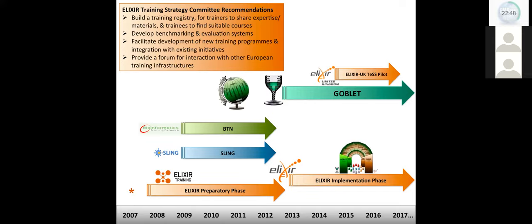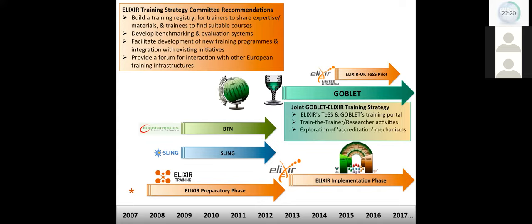So it was quickly evident that there were significant overlaps as you might expect between the training activities of GOBLET and ELIXIR. So in 2015, a joint training strategy was articulated in order to explicitly define areas of joint activity so that it wasn't mission creep between the organisations. So these were to work together on ELIXIR TESS and GOBLET's training portal to collaborate on Train the Trainer and Train the Researcher activities, to explore accreditation mechanisms and to share best practices to professionalise training.